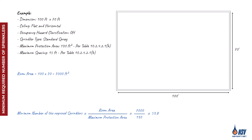If the result isn't a whole number, we round it up. Partial sprinklers aren't an option in fire protection design. Coming up, we'll show how to arrange the required number of sprinklers while following NFPA 13 spacing guidelines.